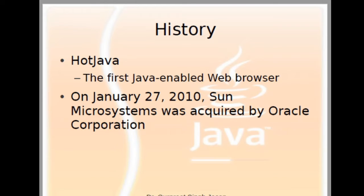If we talk about the history of Java, initially it was called Hot Java, which was the first Java-enabled web browser. On January 27, 2010, Sun Microsystems was acquired by Oracle Corporation. So we can say that now Java is owned by Oracle Corporation.